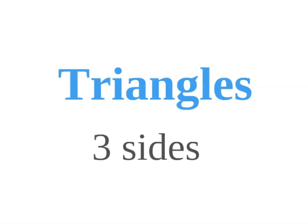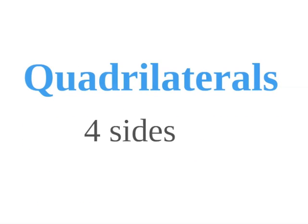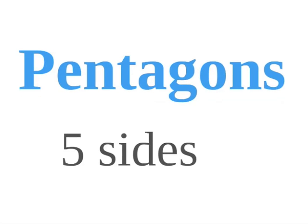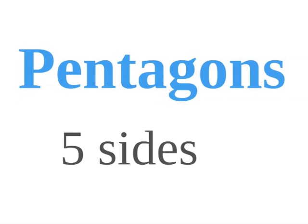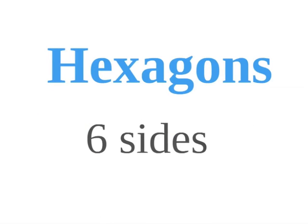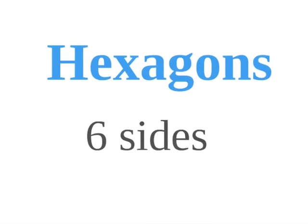So a three-sided polygon is called a triangle. A four-sided polygon is called a quadrilateral. A five-sided polygon is a pentagon. A hexagon is a six-sided polygon.